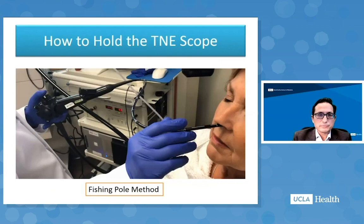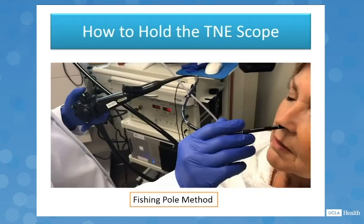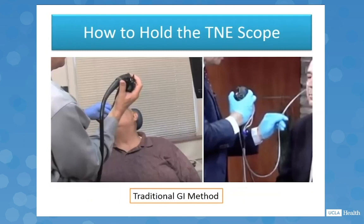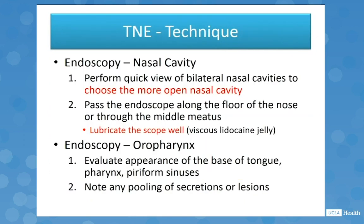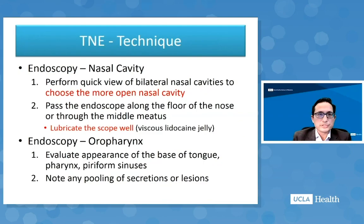Different physicians like to hold the TNE scope differently. There is the fishing pole method where you hold the scope with your hand close to your lower body or hip, and others like the traditional GI method, holding it higher towards your shoulder.